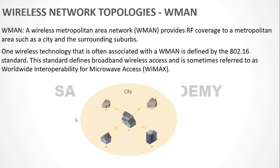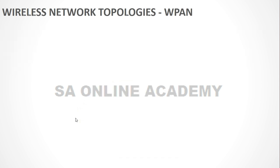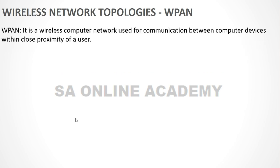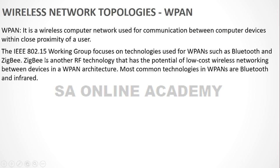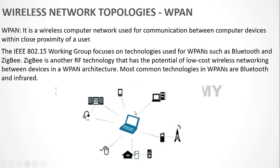The third type is WPAN — Wireless Personal Area Network. It's a wireless network used for communication between devices within close proximity of a user. Bluetooth and infrared-based communication are generally considered WPAN. Bluetooth communication with your handset, earphone, or laptop falls under WPAN. The IEEE 802.15 working group focuses on technologies used by WPANs such as Bluetooth and Zigbee. Zigbee is an RF technology that communicates up to about 10 meters and is used in IoT-based networks.